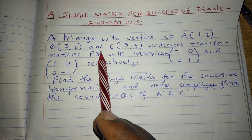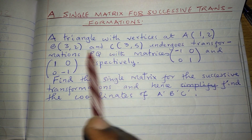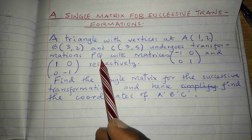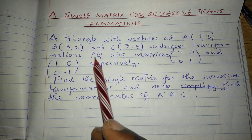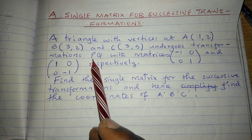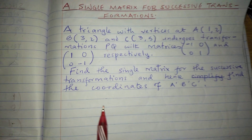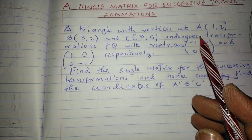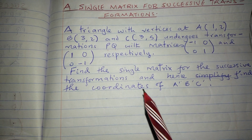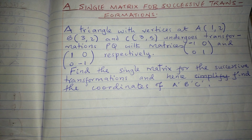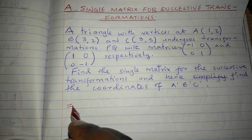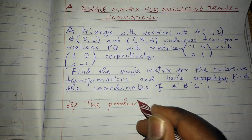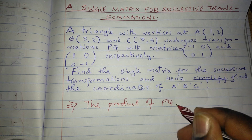For example, we are told that a triangle with these vertices undergoes transformation PQ — P and Q written in this order. Q is performed first, then followed by P. Therefore, instead of performing Q then P on this object separately, we can find a single matrix which will represent those two matrices. The single matrix is found by the product of P and Q in that order.